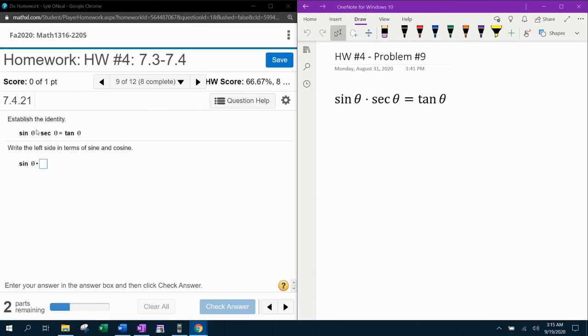So if we look at the problem, it says the first thing they want me to do is write the left side in terms of sine and cosine. Notice the sine they brought down. What they want me to do is convert secant theta into terms of sine or cosine. So what we happen to know is that secant is the reciprocal of cosine.